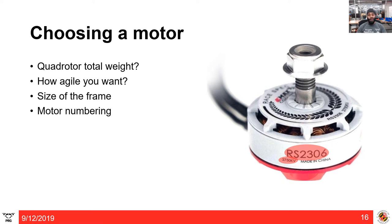How do we choose a motor? The three most important factors are the quadrotor's total weight, desired agility, and frame size. If you know the frame size, you can determine the right propeller size — for example, a 450-size quadrotor cannot use more than an 8-inch propeller. Using the weight and propeller size, you can compute how much thrust the motors need to lift and fly the quadrotor. A general rule of thumb is that the motors should provide twice the total weight in thrust.